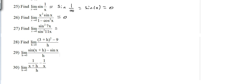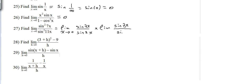This equals the limit as x tends to 0 of sine 7x over sine 11x, times the limit again of sine 7x over sine 11x as x tends to 0.